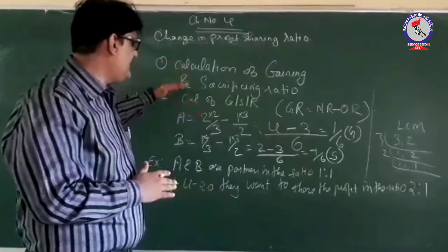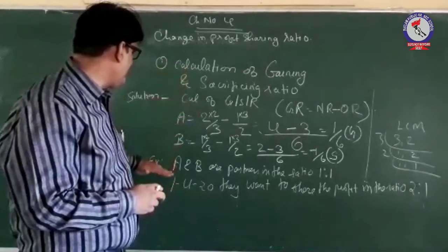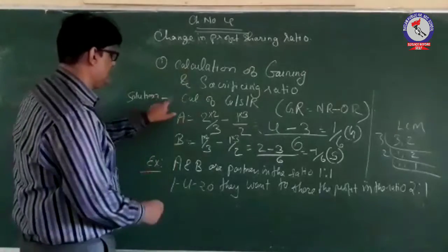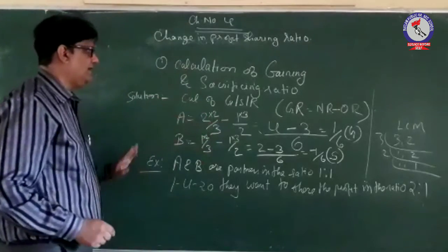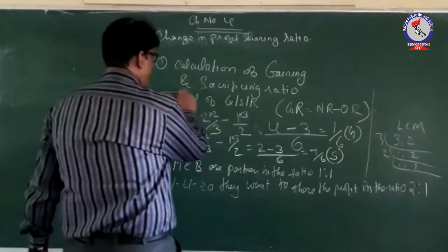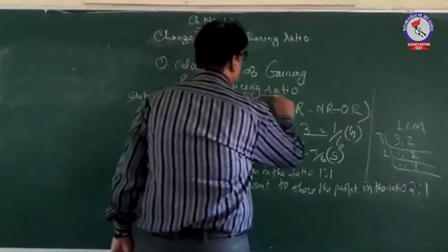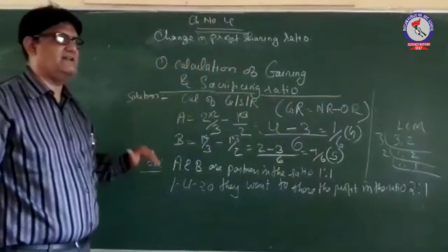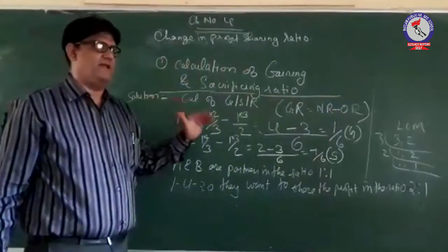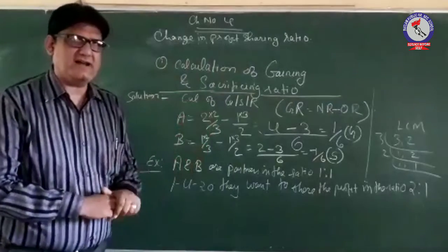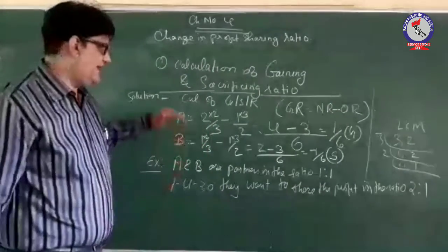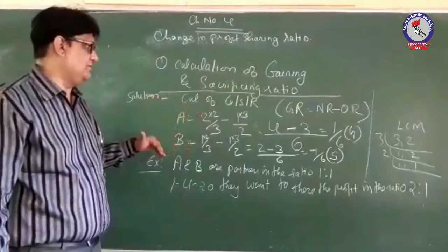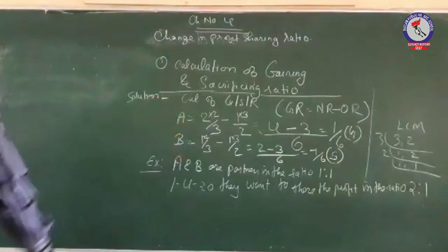So just see this — this is an example and this is the solution for this example. What we have done is seen the calculation of gaining and sacrificing ratio with the help of one given condition: when both the new and old ratios are given to you. It is clear how we have to find out this ratio — just see it carefully.